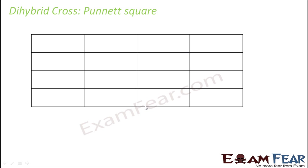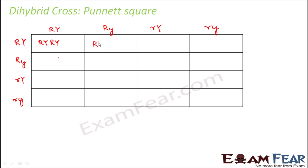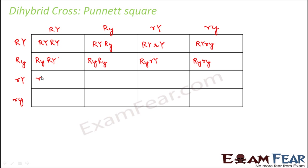So here we will design a Punnett square. Now that we know the gametes, let us quickly design it. In a Punnett square, we write down the male gametes and the female gametes on the topmost row and on the leftmost column. So we will first write down all the gametes. Once you have written all the gametes, it is very easy to make the combinations. Now here you can understand the significance of having a Punnett square — if you would have tried to do it manually, there were chances you could have missed quite a few combinations. But if you are using a Punnett square, it makes things easy and you can be sure you haven't missed out anything.